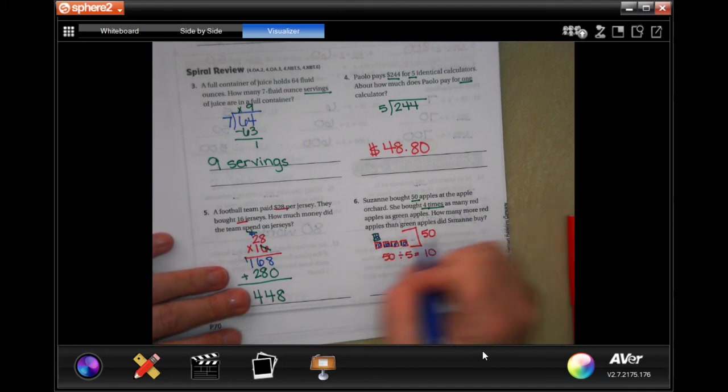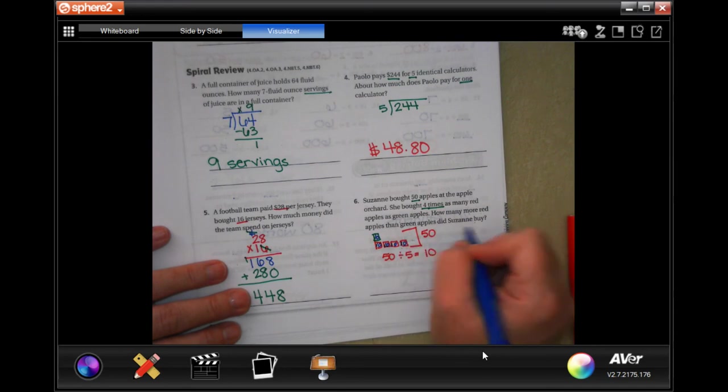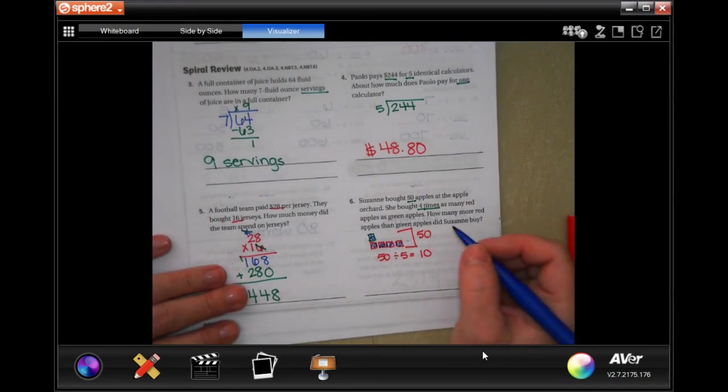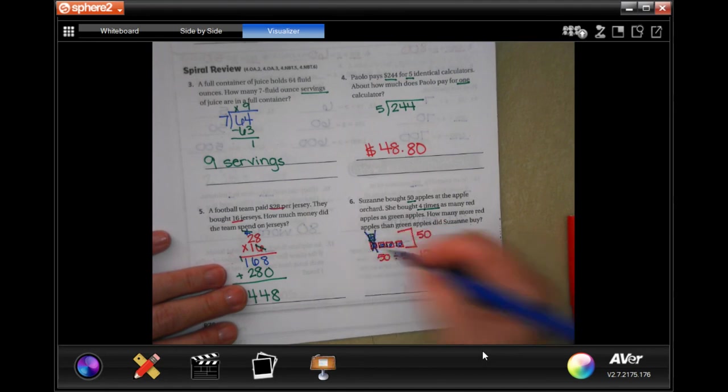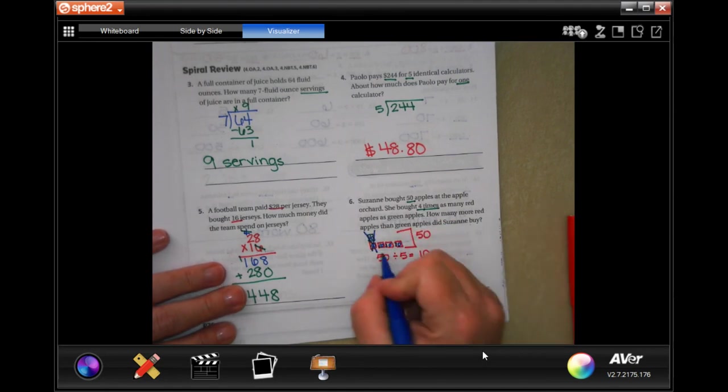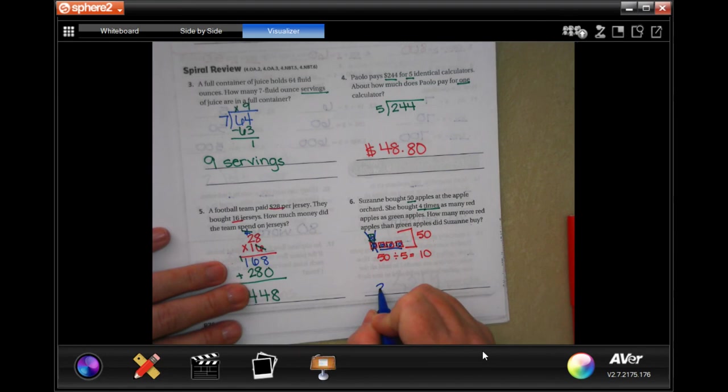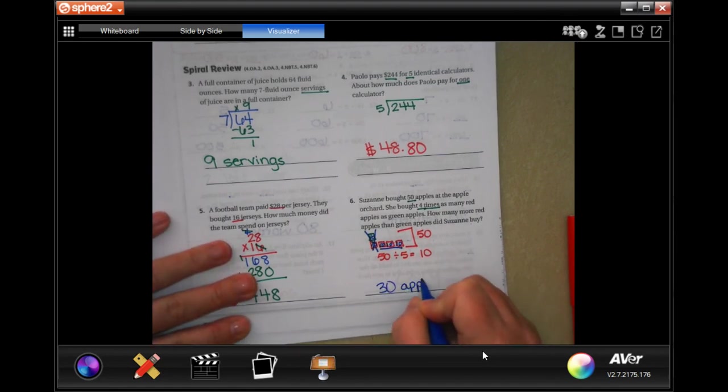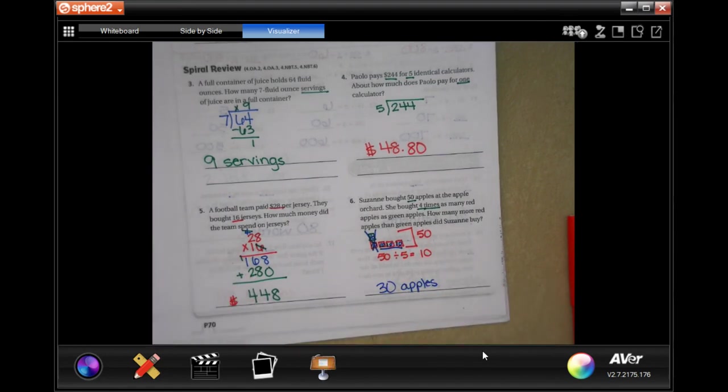How many more red apples than green apples did Suzanne buy? Well, you could count them up and then subtract, or you could cancel out the ones they have in common and then just count the ones that are left, which is thirty apples.